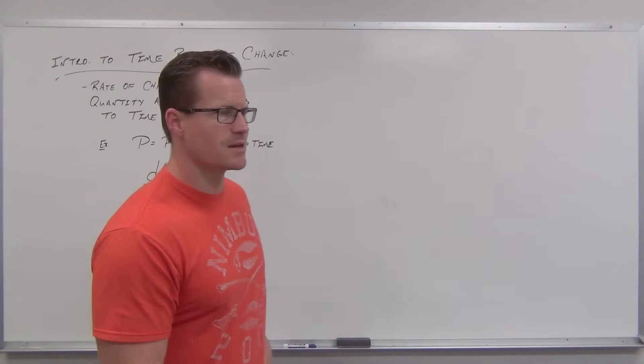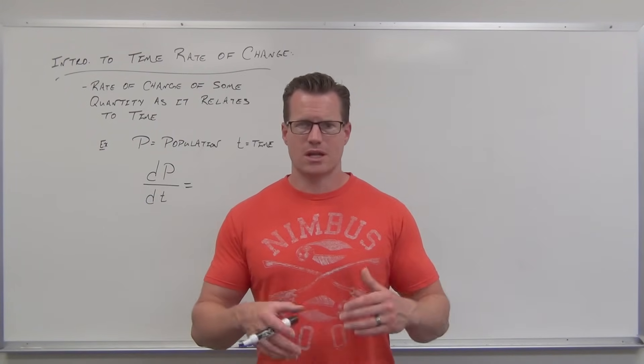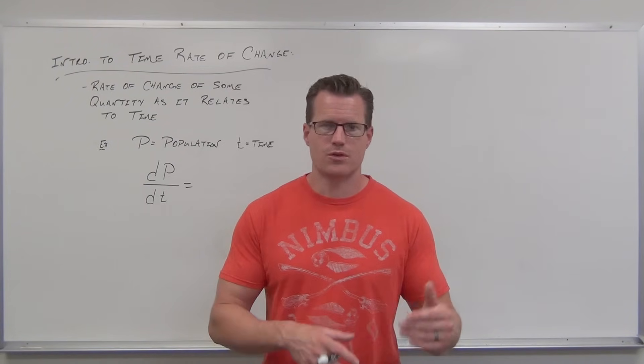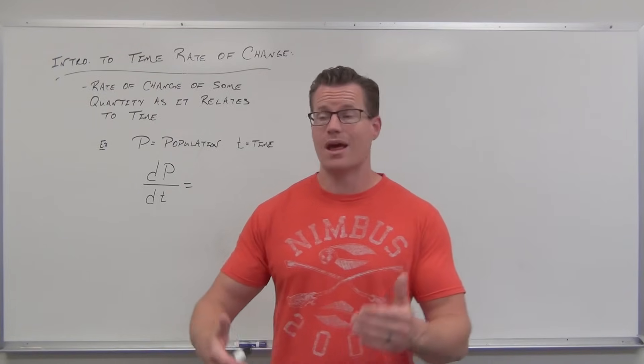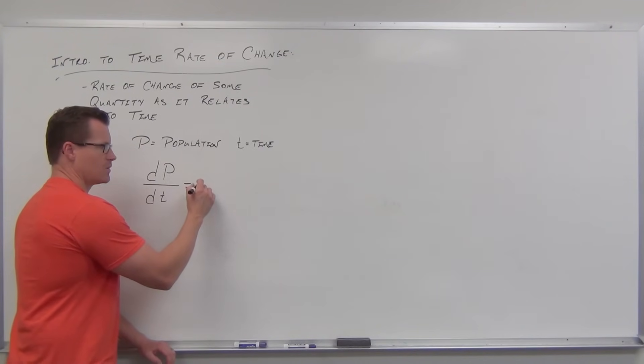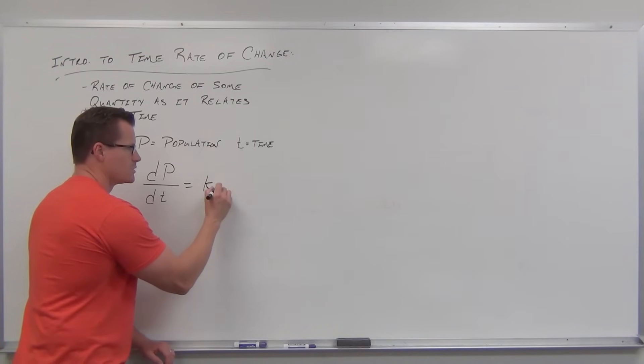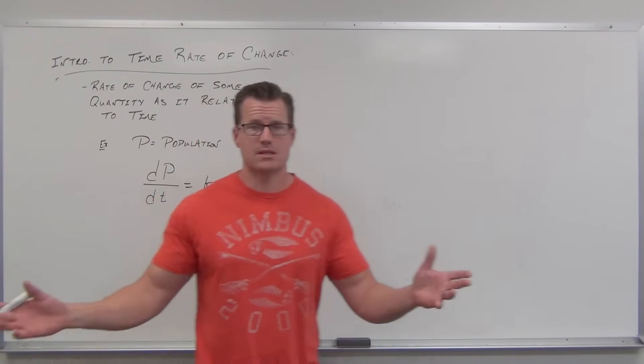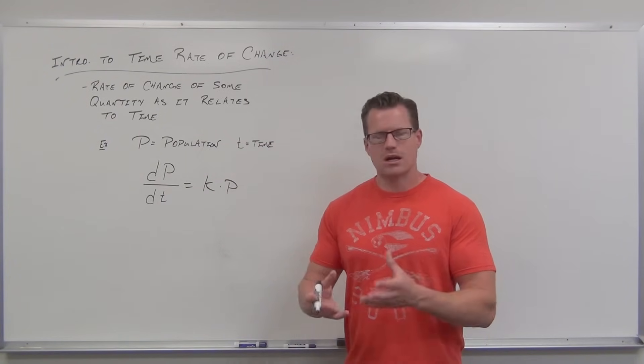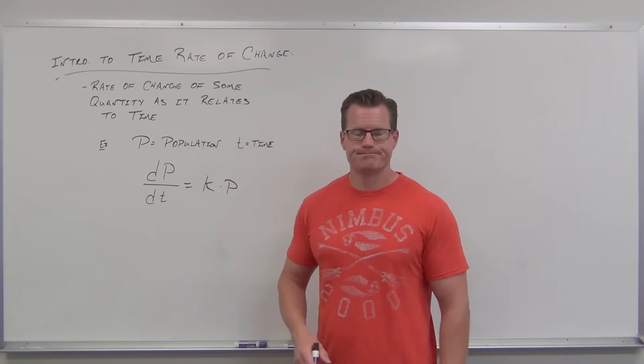When we deal with proportionalities, if you want to look back at direct variation or inverse variation, that would be intermediate algebra level. Whenever we say varies directly or varies inversely, we have a K, this constant of variation. Same thing here. So our population varies, or the rate of change of our population with respect to time, is proportional to the population. That's some basic stuff. So this is what it might look like. It's saying that's the way our population is changing and it's proportional to the population.